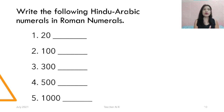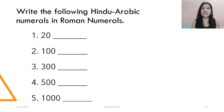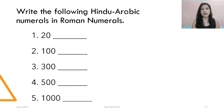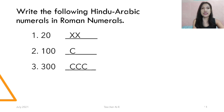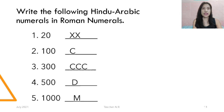Let's have a drill to see what you've learned. Write the following Hindu-Arabic numerals in Roman numeral: 20, 100, 300, 500, and 1,000. The answers are: 20 is XX, 100 is C, 300 is CCC, 500 is D, and 1,000 is M.